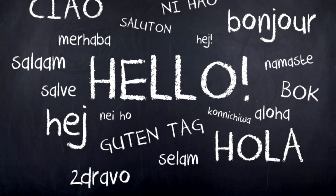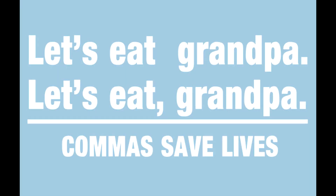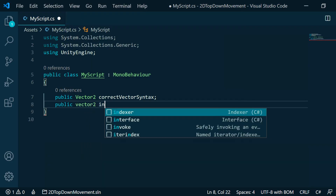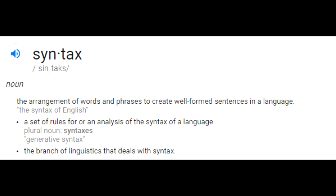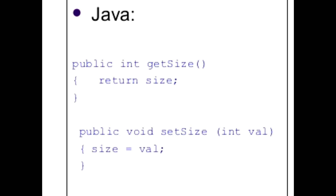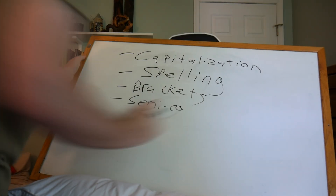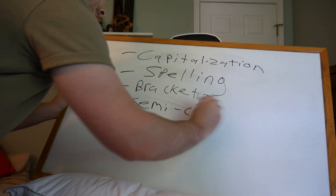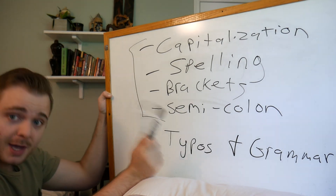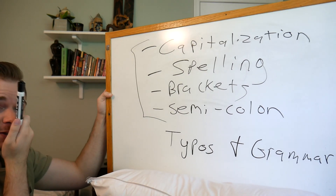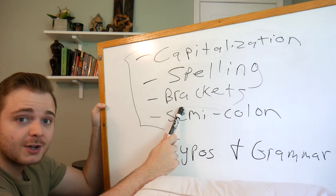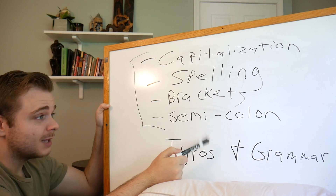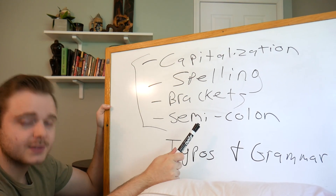Syntax errors. Just like in any language there is structure, grammar, and spelling — and these things matter just as much in a programming language. If you get them wrong, your software breaks. For those completely new to programming, pay attention to these categories: capitalization matters, spelling matters — lowercase vector2 and capitalized Vector2 are different things. Make sure you're closing all your brackets and ending every line with a semicolon unless you're using brackets.